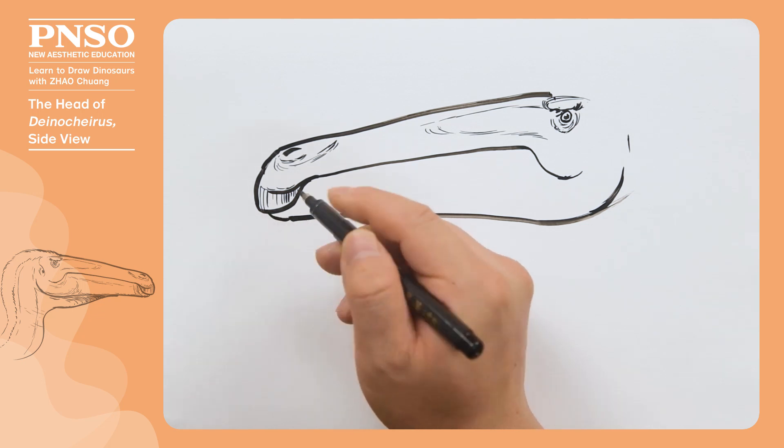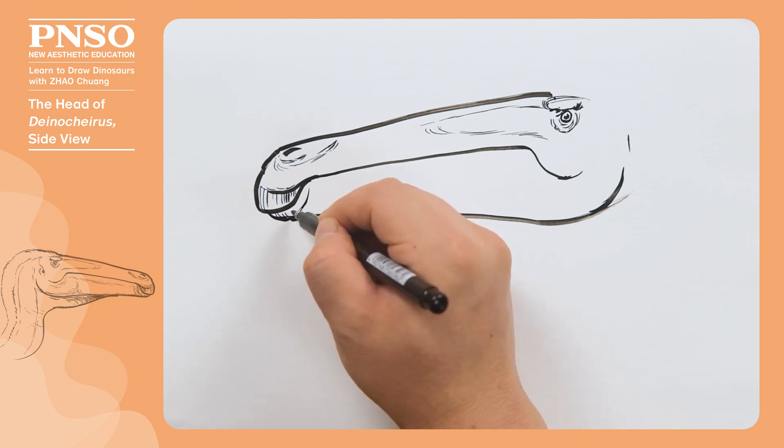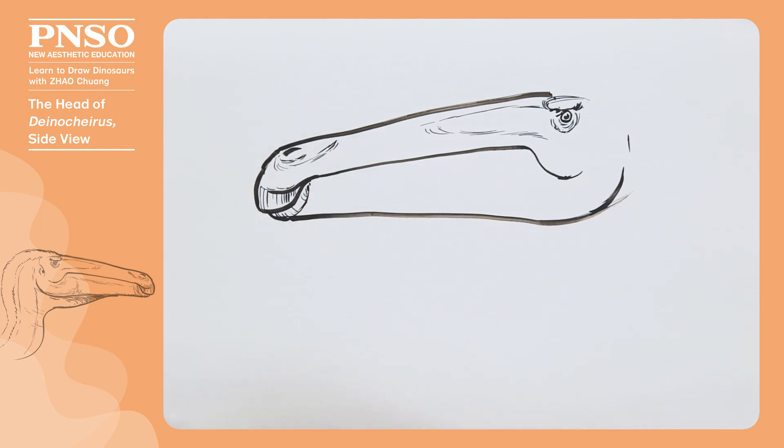At the front of the mouth, there was a small beak that matched the upper beak. We draw some lines on the beak to show the hardness.